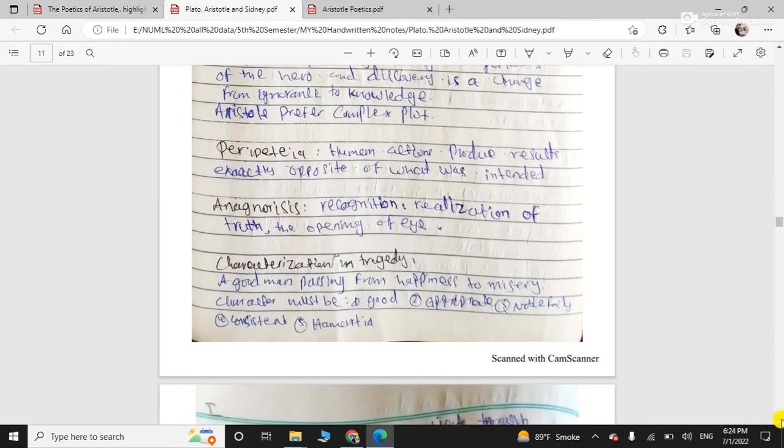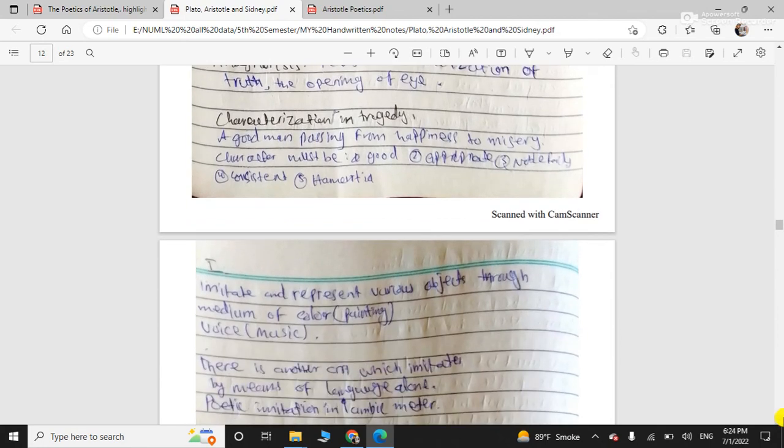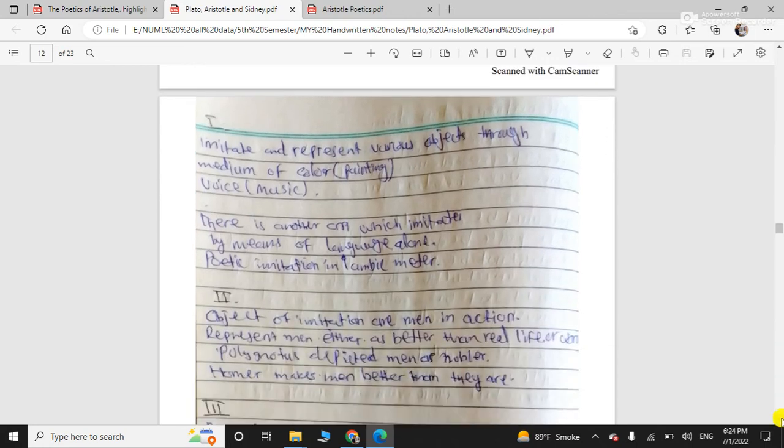When the concept is peripeteia, which is a human action which produces results exactly opposite of what was intended. Ironical thing, you know. Fear and ignorance, he talks about it. It is the recognition, realization of the truth. From ignorance to knowledge. Eye-opening thing. And characterization, what type should character be? Must be good, appropriate, noble, consistent and he must have a tragic flaw, hamartia, that is.